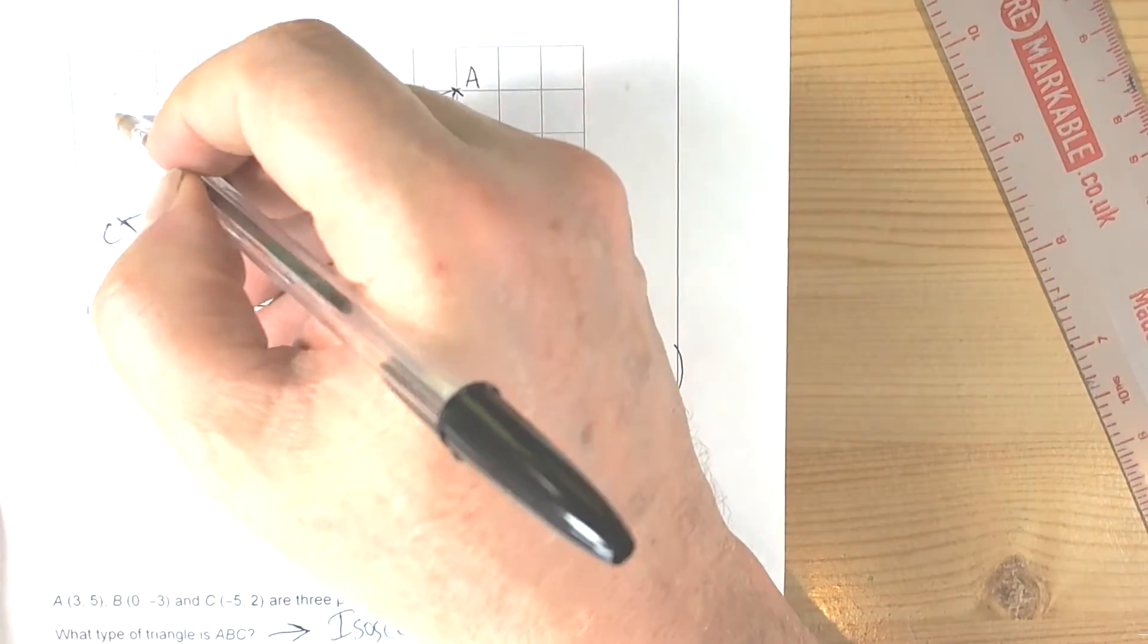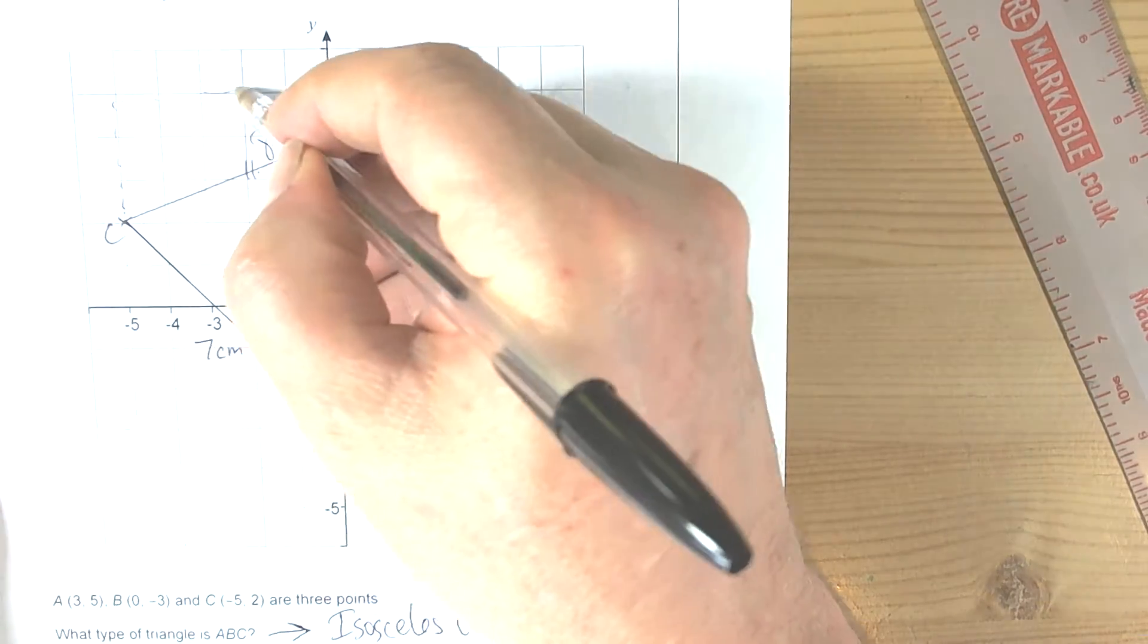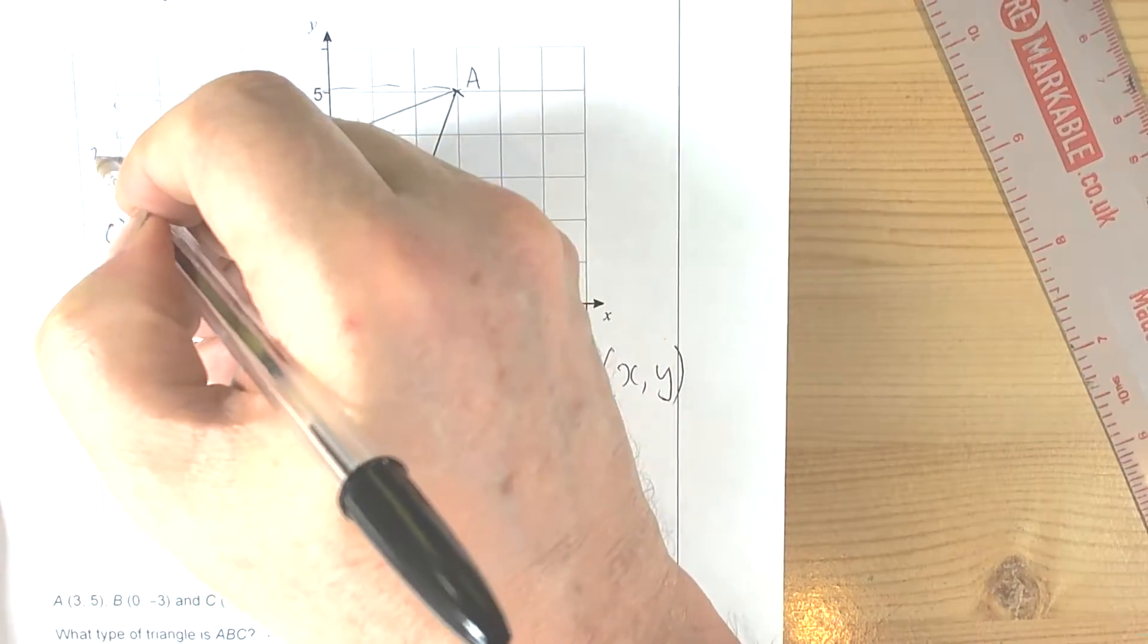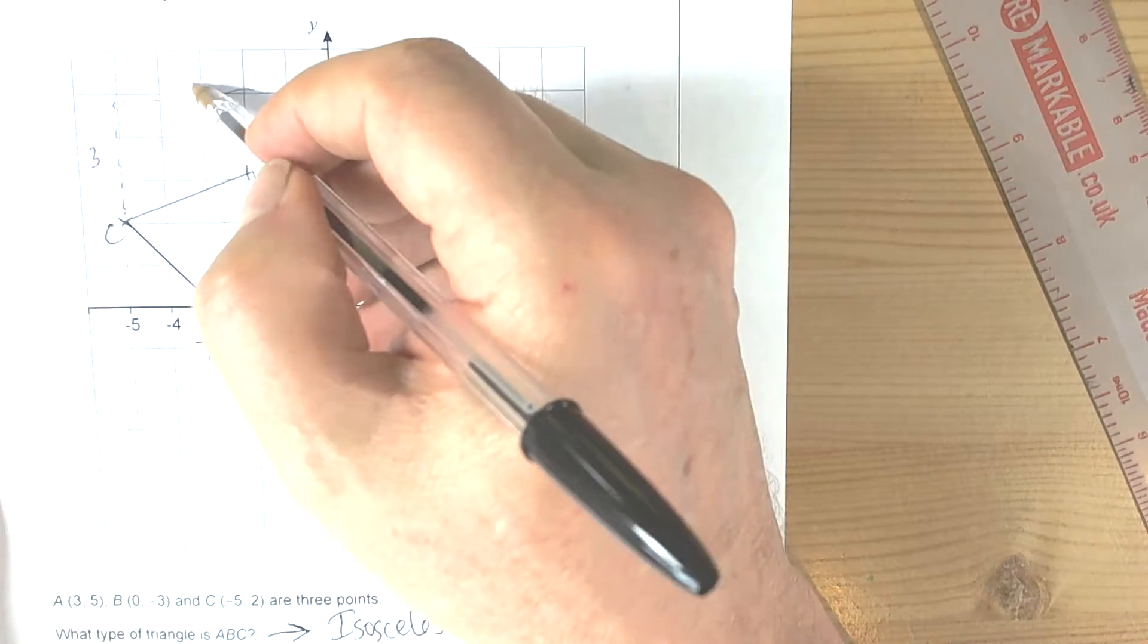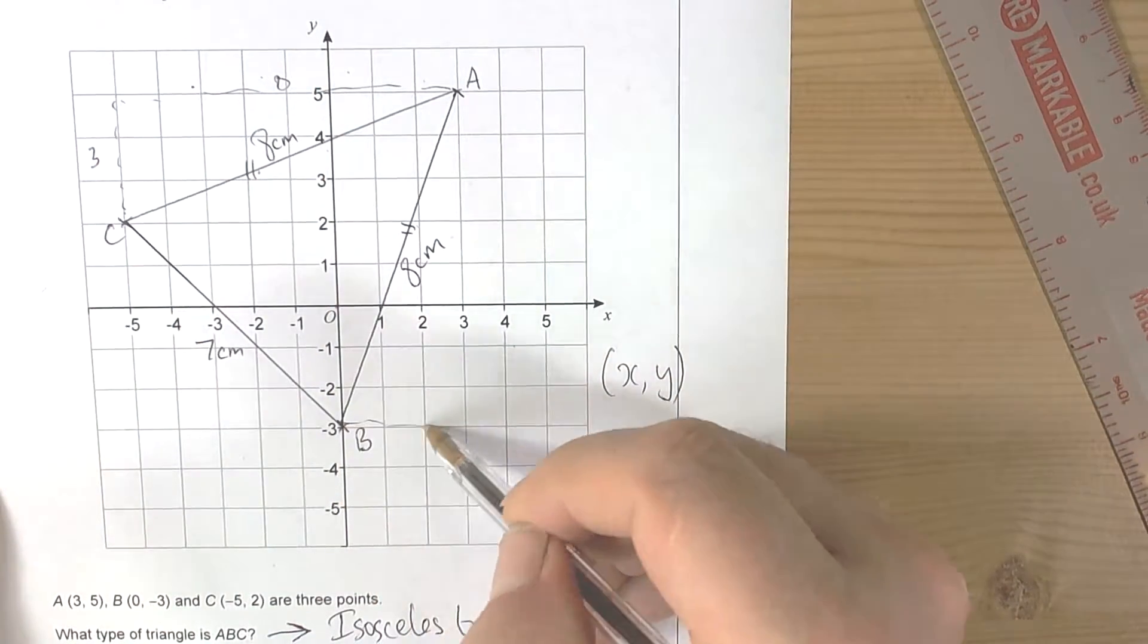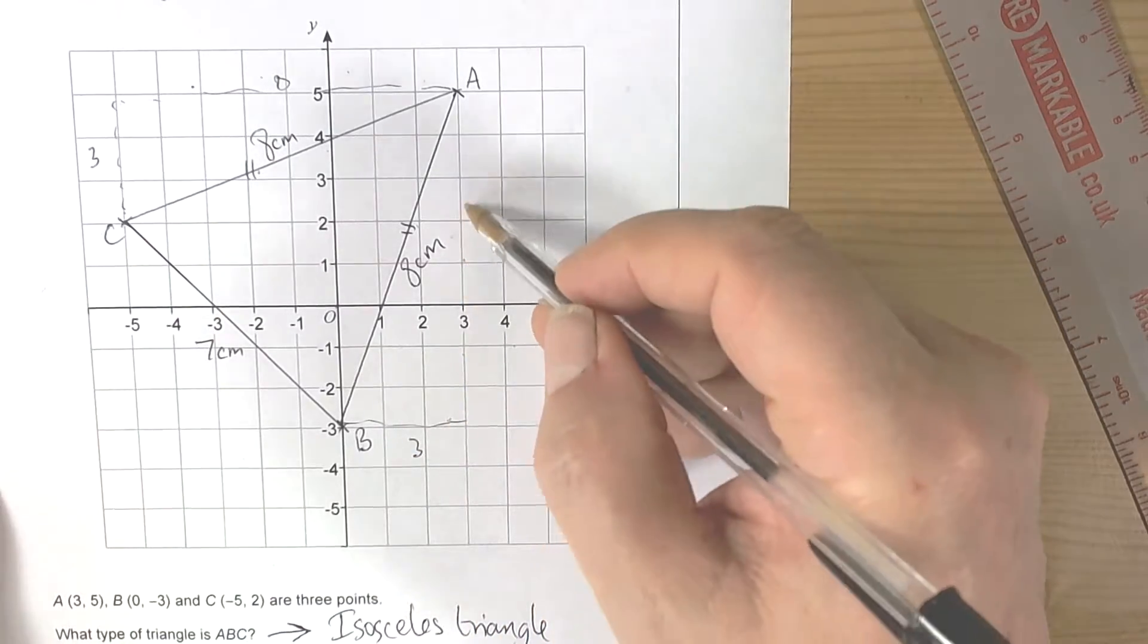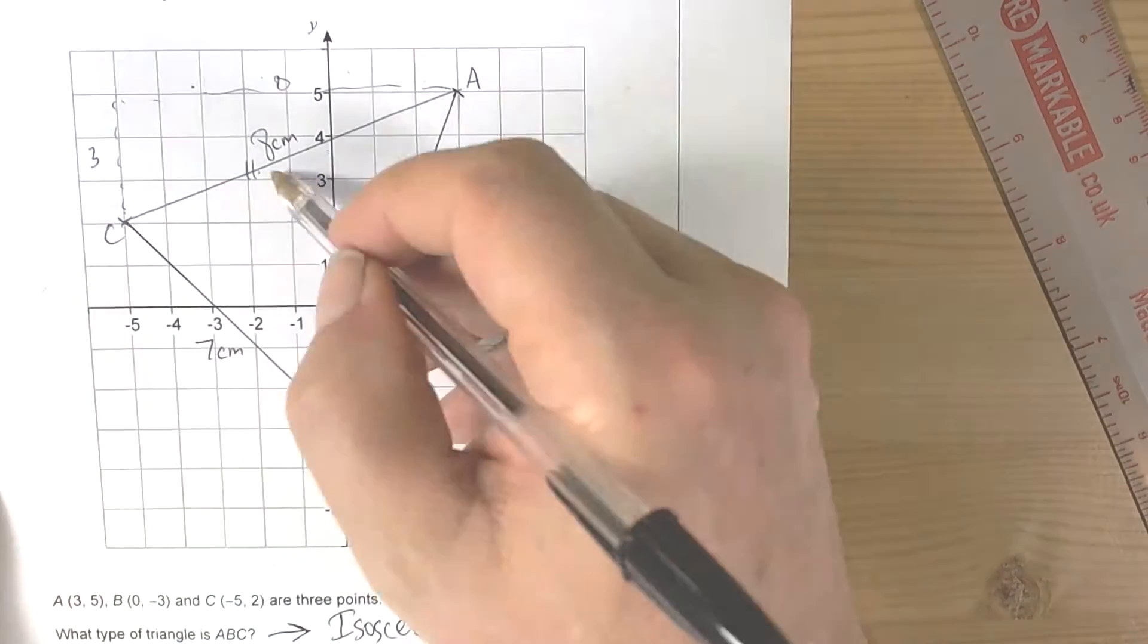The other way to think of it in terms of lengths, if you're not sure, is to get from C to A. We had to go three up and two, four, six, eight across. And to get from B to A, we had to go three across and two, four, six, eight up. So these two lengths are definitely equal to each other, making it an isosceles triangle.